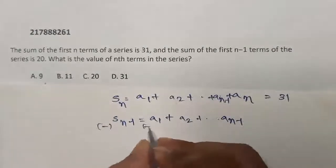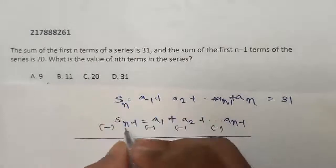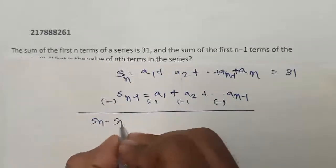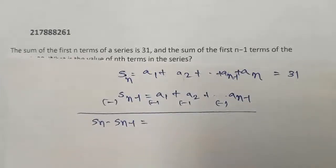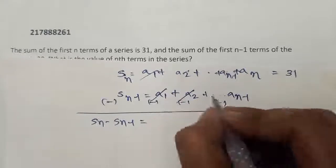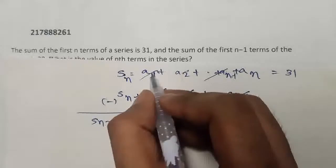So, if you subtract these two, Sₙ minus Sₙ₋₁. So, this will be Sₙ minus Sₙ₋₁ will be equal to, a₁ will get cancelled, a₂ will be cancelled, all the rest of the terms in Sₙ₋₁ will be cancelled because all these terms are in Sₙ.